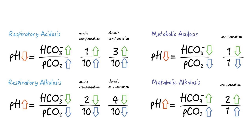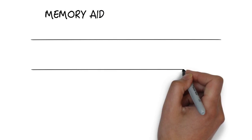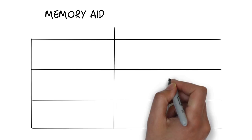What if the pCO2 doesn't change by the predicted amount? If the pCO2 is lower than predicted, then respiratory alkalosis is also present, and if it's higher than predicted then respiratory acidosis is also present.